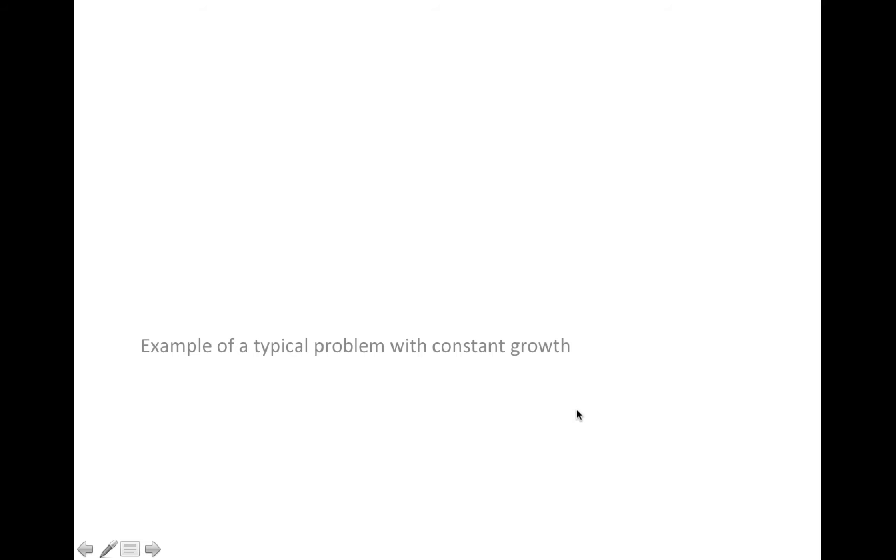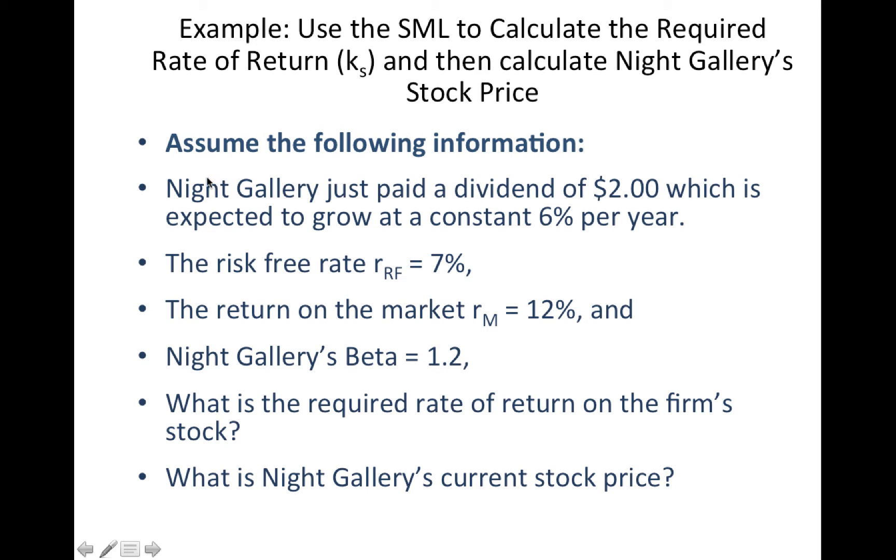So let's take a look at a typical example of a problem with constant growth. We have a company, Night Gallery, that just paid a dividend of $2 and expected to grow at 6% per year, constant. The risk-free rate is 7%, return on the market is 12%, and the beta is 1.2%. You might be asking yourself, what does beta have to do with this? Well, to calculate the stock price, we're going to have to first calculate the required return on Night Gallery.